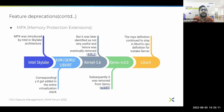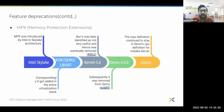We continue with feature deprecations with another example: the MPX flag. MPX was a CPU feature introduced by Intel in its Skylake architecture, and it got added through the entire virtualization stack of KVM, QEMU and libvirt. But it was later identified as not very useful and was eventually removed from kernel 5.6, and subsequently also removed from the QEMU 4.0 release.